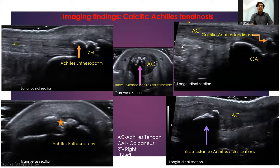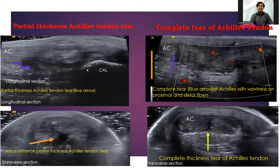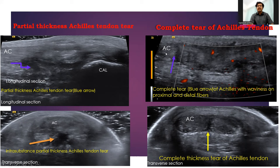Coming to the images — as seen in various images showing calcific Achilles enthesopathy, there are intrasubstance Achilles calcifications noted. The next pathology detected was Achilles tendon tear: here is a partial thickness tear as observed in longitudinal and transverse sections. Here is a complete tear of the Achilles tendon with waviness preserved on the proximal and distal fibers, and again a complete thickness tear shown in transverse section.